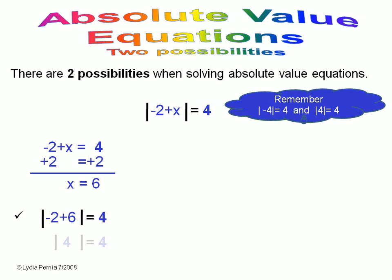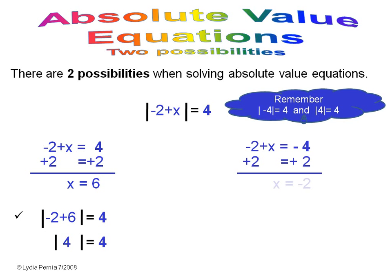You add two to both sides, and you have x equals six. Now for the next one, remember that negative four equals four also, so when we set up the equation, we do negative two plus x equals negative four. Then you solve it like any other equation: add two to both sides, and x is equal to negative two.